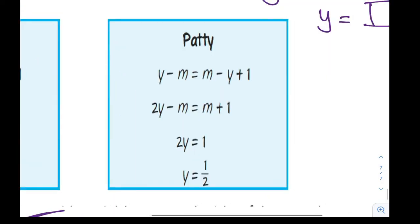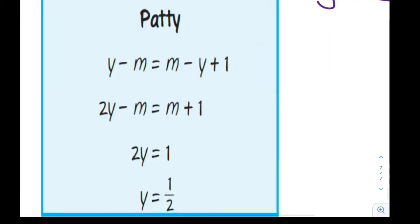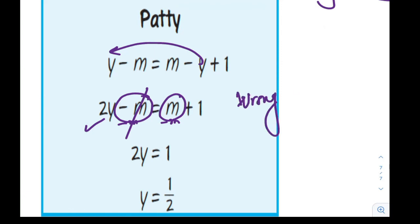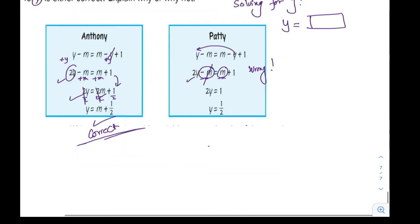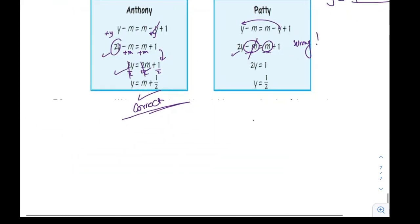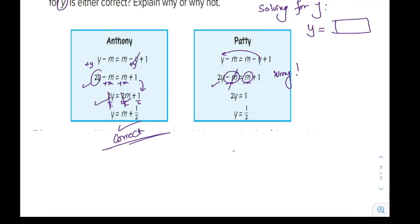Let's see what happened with Patty. Patty is confused. She added the y, yes, but she thought that this term and this term are the same. So when she subtracted here, she canceled, which is wrong. So the step here is wrong. I hope you all get the ideas. Thank you very much for listening and see you in the next video. Goodbye.